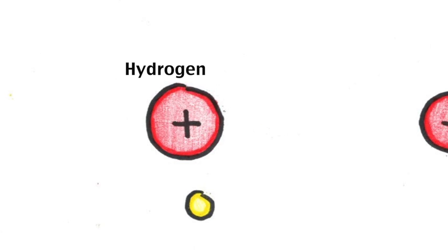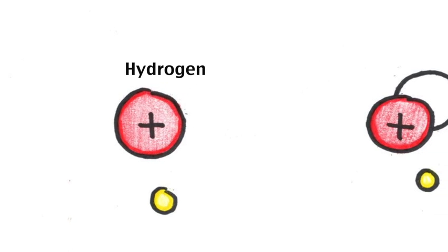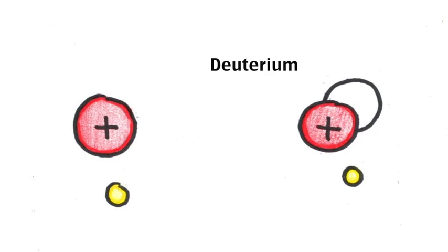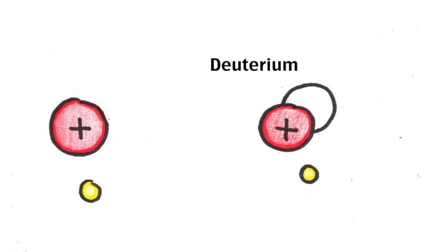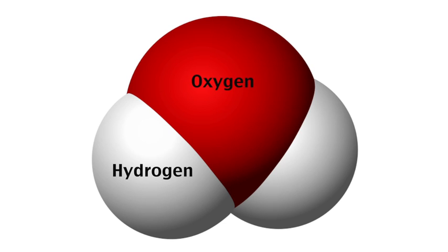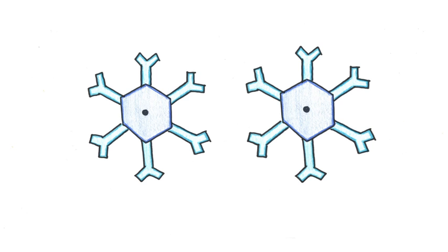This is because here on Earth, hydrogen doesn't come in just one form. Sometimes there's an extra proton attached to the molecule forming deuterium. Every one in three hundred hydrogen atoms on Earth are actually the isotope deuterium. Because of this, in a snowflake that is made up of water molecules that are comprised of hydrogen and oxygen, even though the snowflake may look identical to another snowflake to the naked eye, there can be deuterium atoms scattered throughout the structure randomly in different locations.